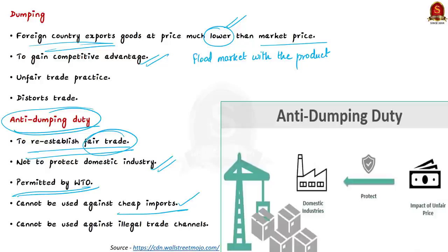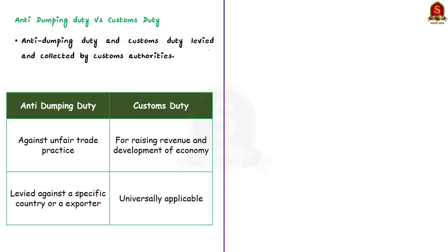Anti-dumping duty cannot be used against cheap imported goods, nor can it be imposed against goods brought through illegal trade channels like smuggling. This duty is levied and collected by customs authorities. Don't confuse anti-dumping duty with customs duty — anti-dumping duty serves as a remedy to the domestic industry, whereas customs duties are a means of raising revenue for overall development of the economy.